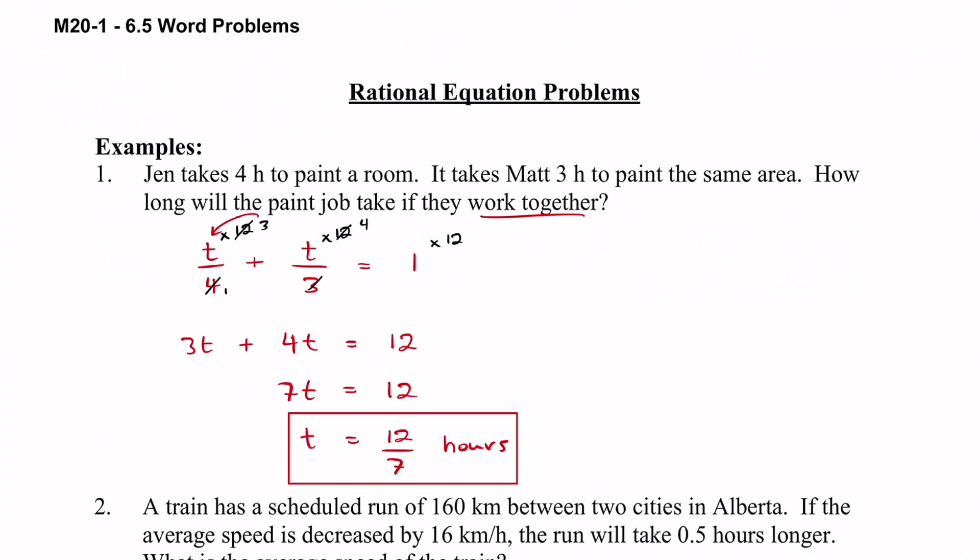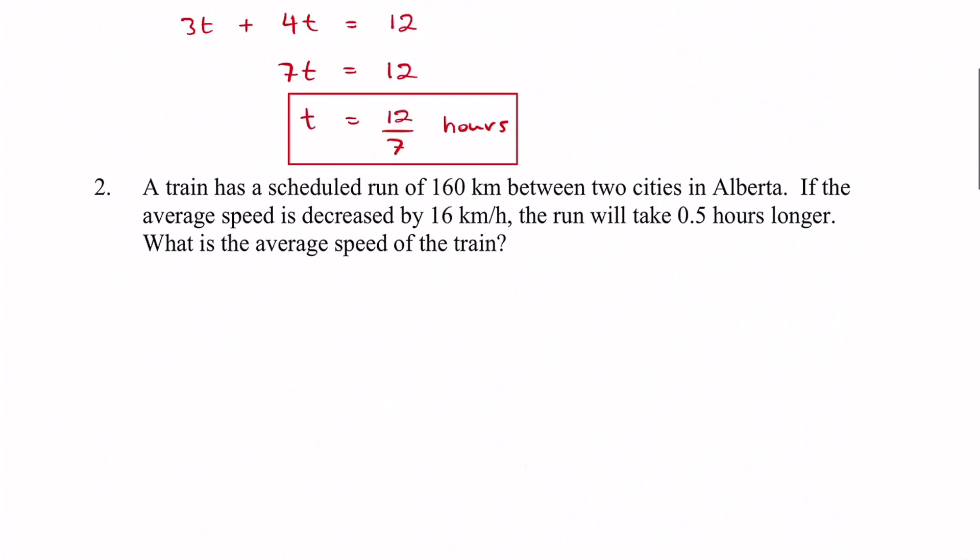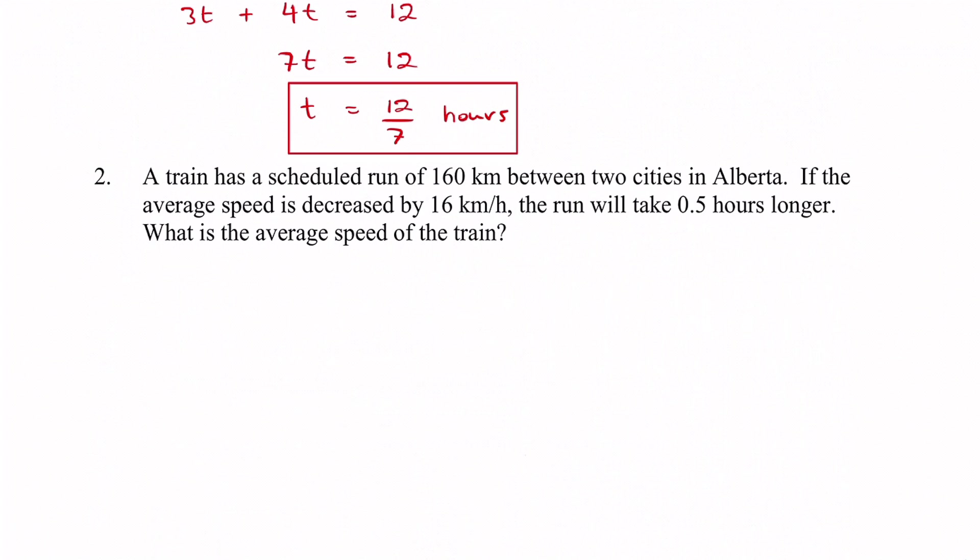Our next example here, number two. It says a train has scheduled a run of 160 kilometers between two cities in Alberta. If the average speed is decreased by sixteen kilometers an hour the run will take point five hours longer. What is the average speed of the train?